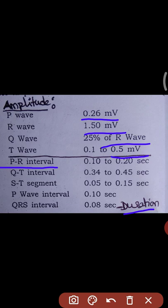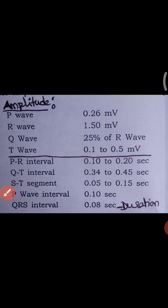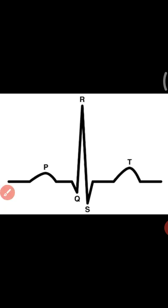The P-to-R interval duration is 0.10 to 0.20 seconds. The Q-to-T interval is 0.34 to 0.45 seconds. The S-to-T segment is 0.05 to 0.15 seconds. The P wave interval is 0.10 seconds. The QRS interval is 0.08 seconds. These are the different amplitudes and durations of electrocardiography.